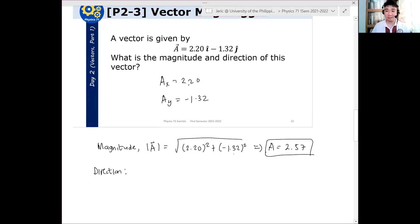The direction is what? So first things first, we ignore the sign of 2.20 and 1.32. So ano mangyayari? So hanapin muna natin si related acute angle phi, which is just arctan. Ano dito yung Ay? Ay is 1.32, but we ignore the sign. So we have 1.32 over 2.20.